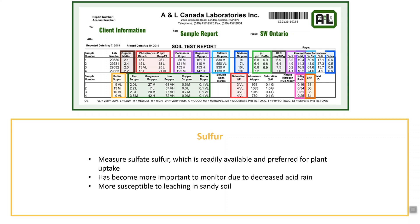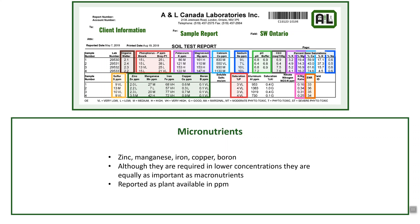Sulfur is somewhat susceptible to leaching, especially in lighter textured soils, and an optimum level greater than 25 PPM helps maximize plant productivity. The next section covers the five micronutrients: zinc, manganese, iron, copper, and boron. Although they are not required in large quantities, adequate levels are still important. Optimum ranges are approximately: zinc at 5 PPM, manganese around 33 PPM, iron in the 25 PPM range, copper at 3 PPM, and boron between 1 and 3 PPM depending on soil type.